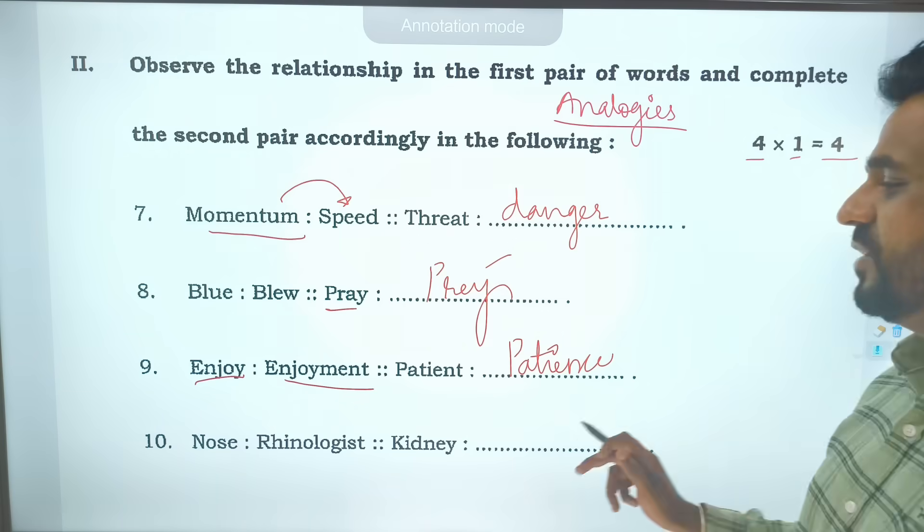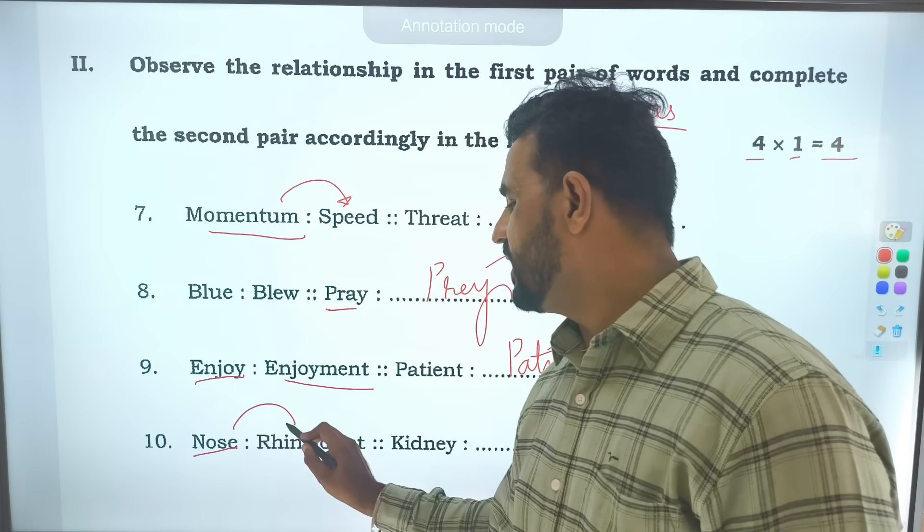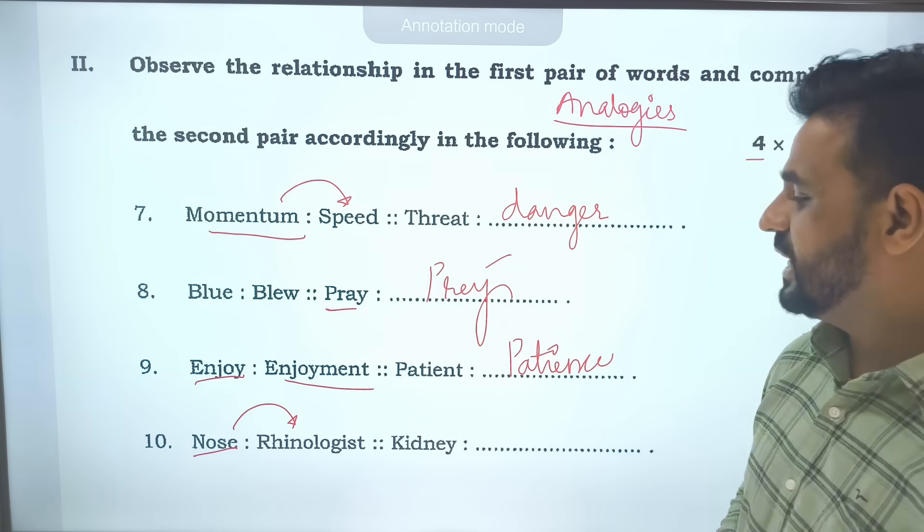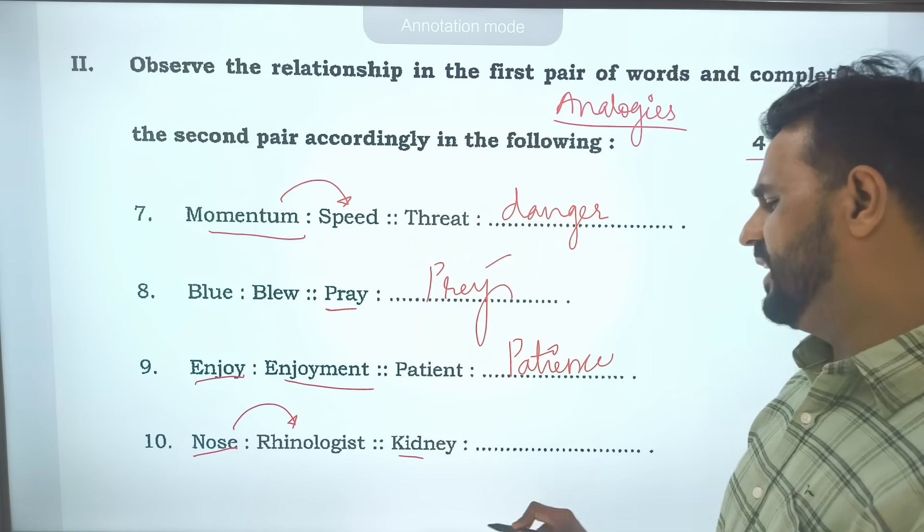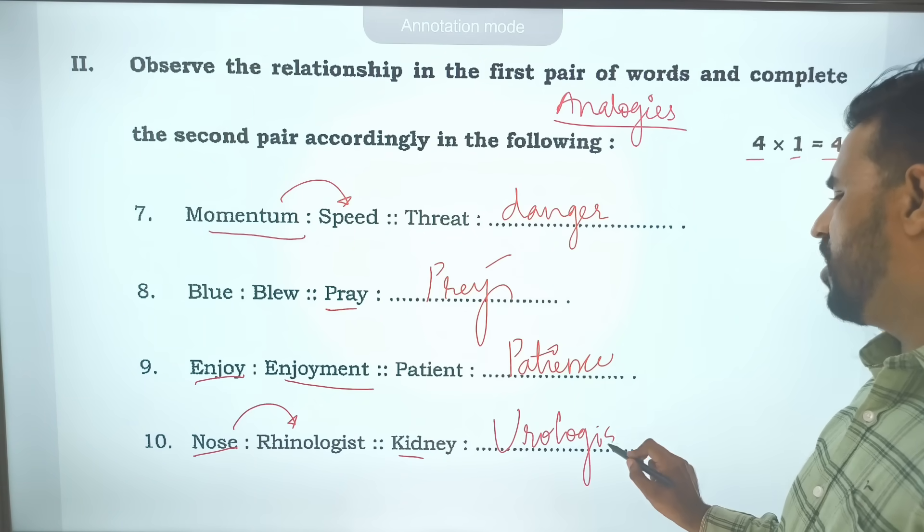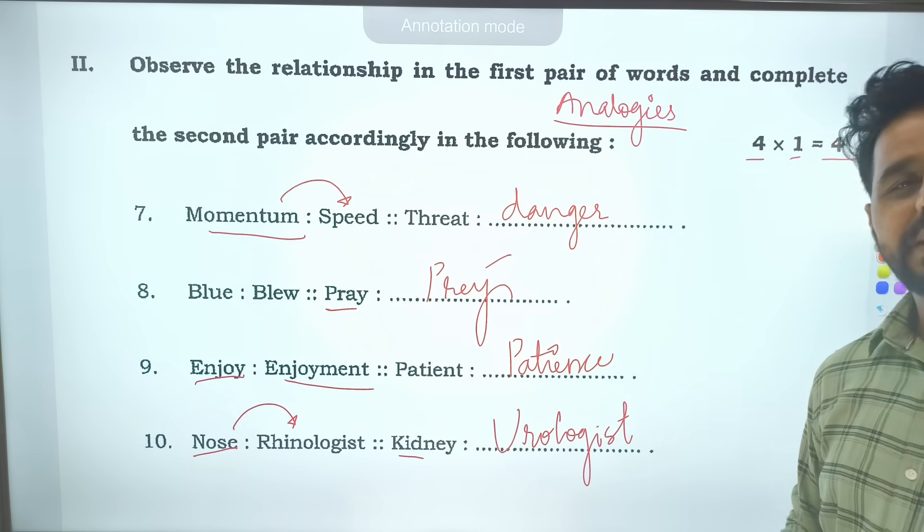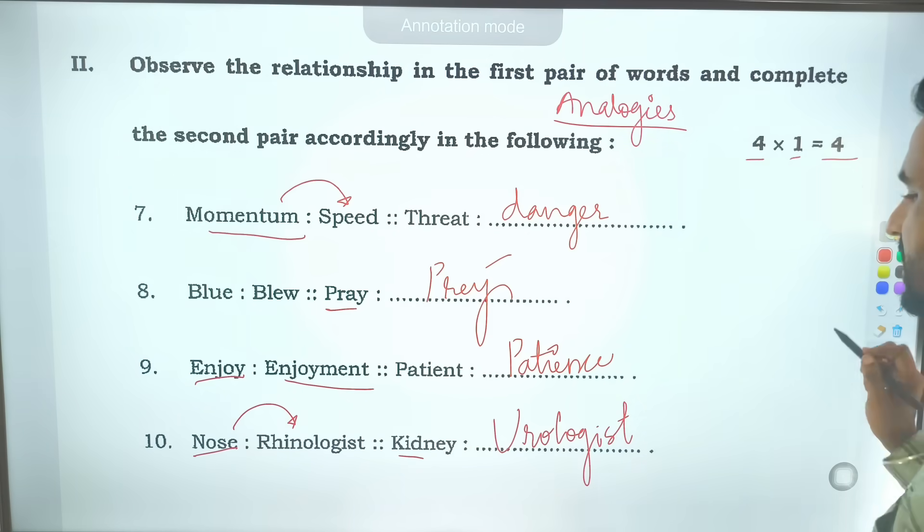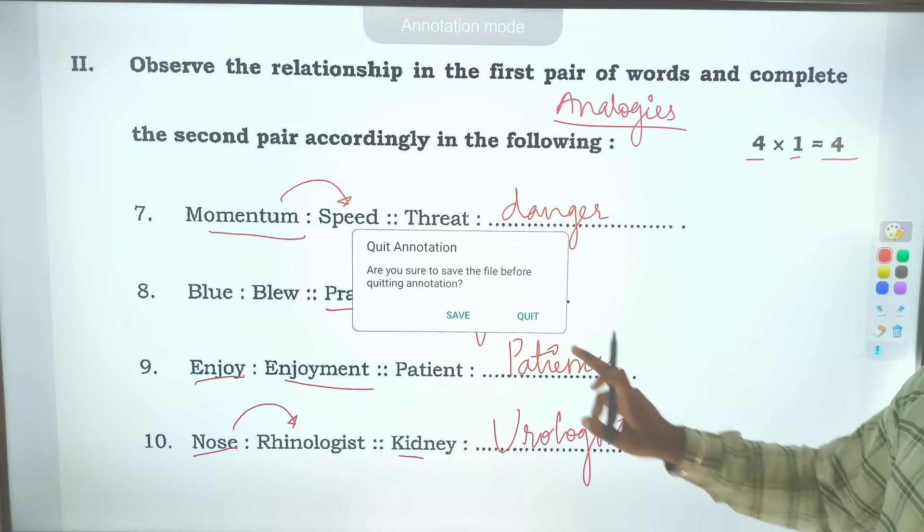Nose - the study of nose, the person who studies nose, we call it rhinologist. R-H-I-N-O-L-O-G-I-S-T. The person who studies kidney, the answer is urologist. Study of kidney is urology, the person who studies is urologist. I hope you got this.